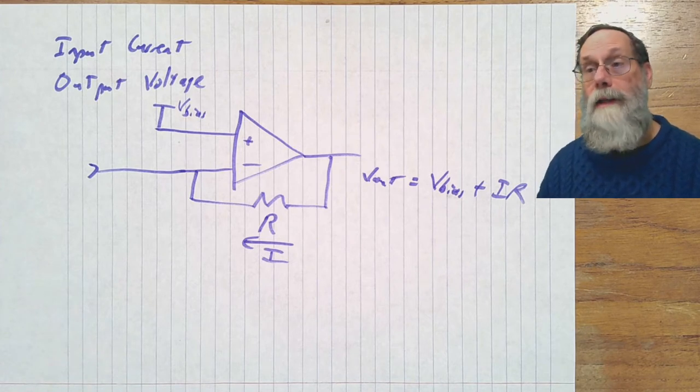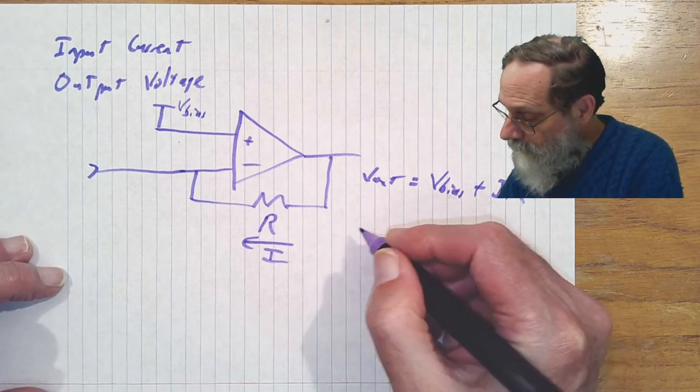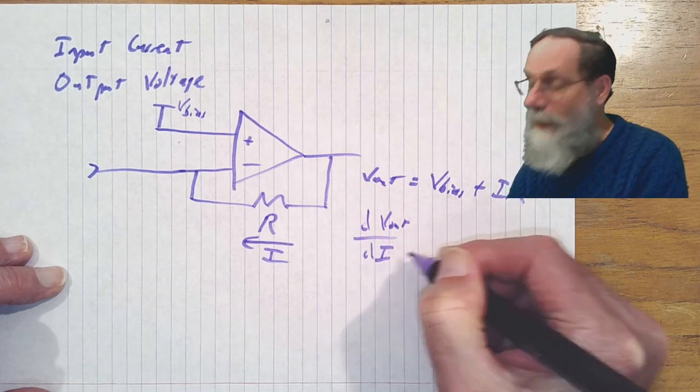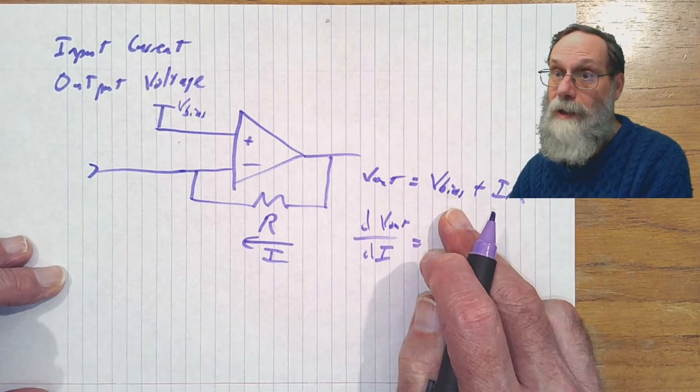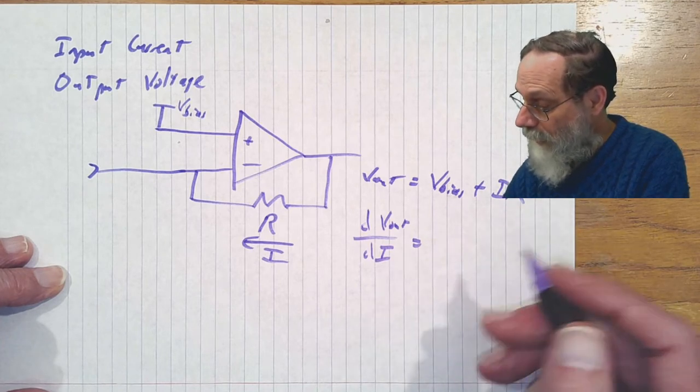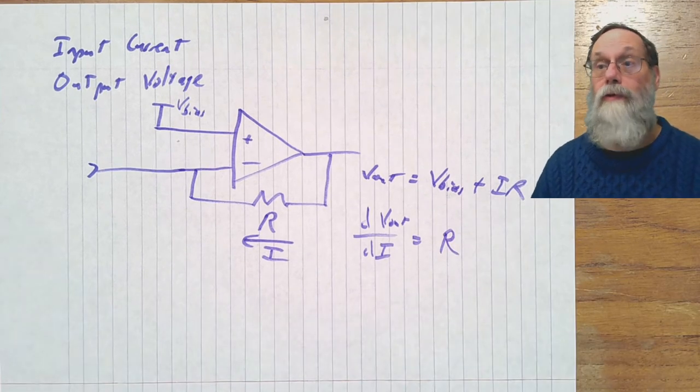If you think about this, what is the output derivative with respect to the input? If we look at dV out dI, well, V bias is a constant, so that's not going to change. And the derivative of IR with respect to I is just R. So the gain of this transimpedance amplifier is just the size of the feedback resistor.